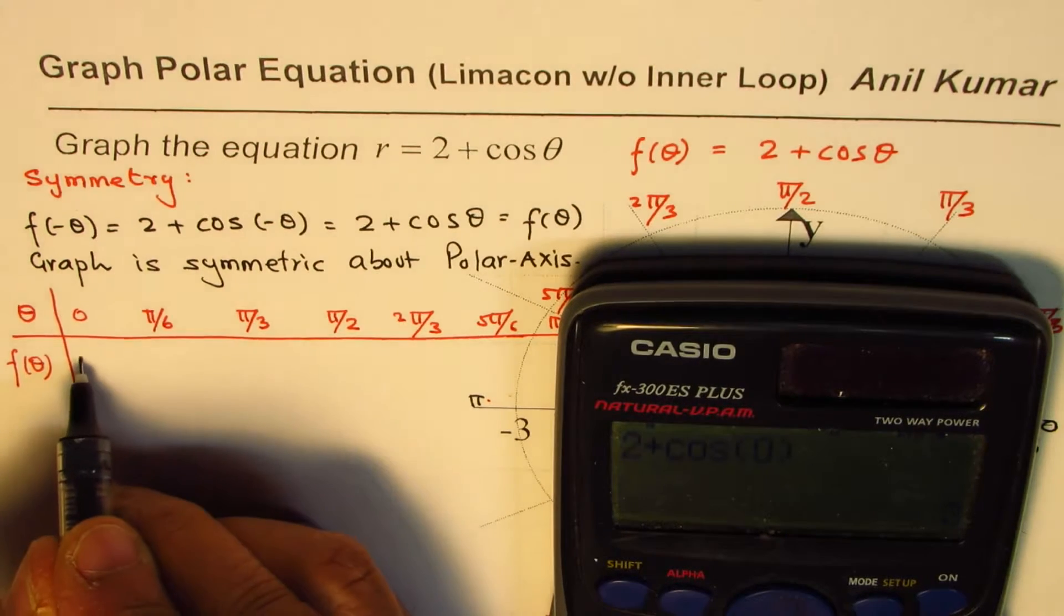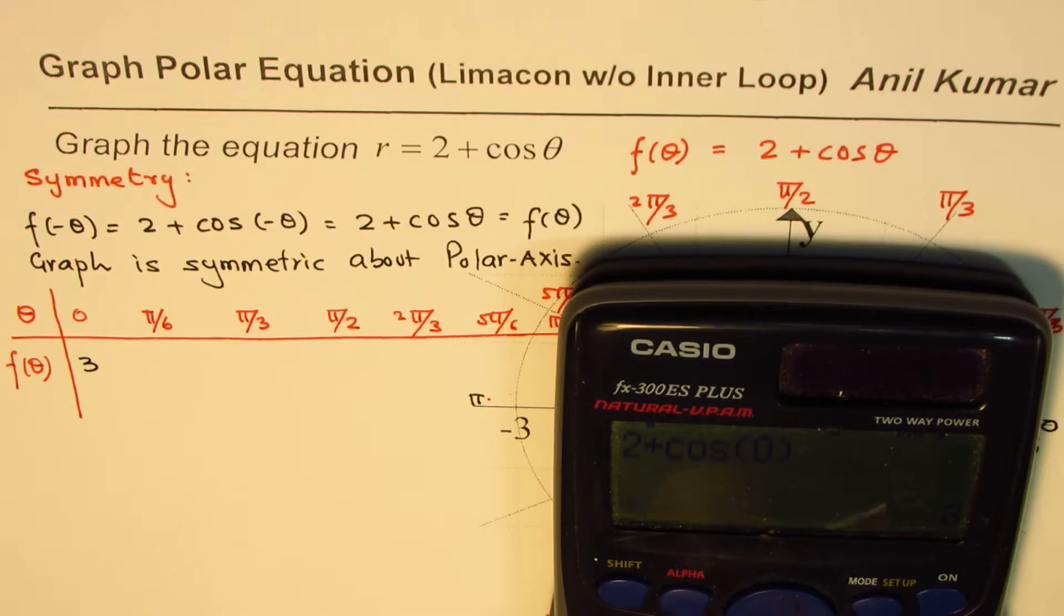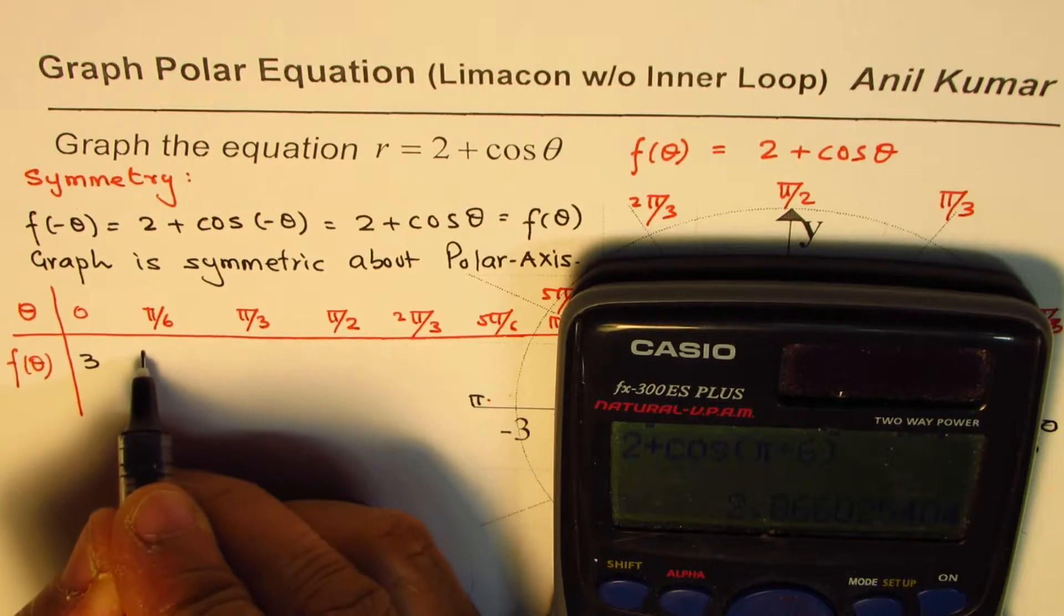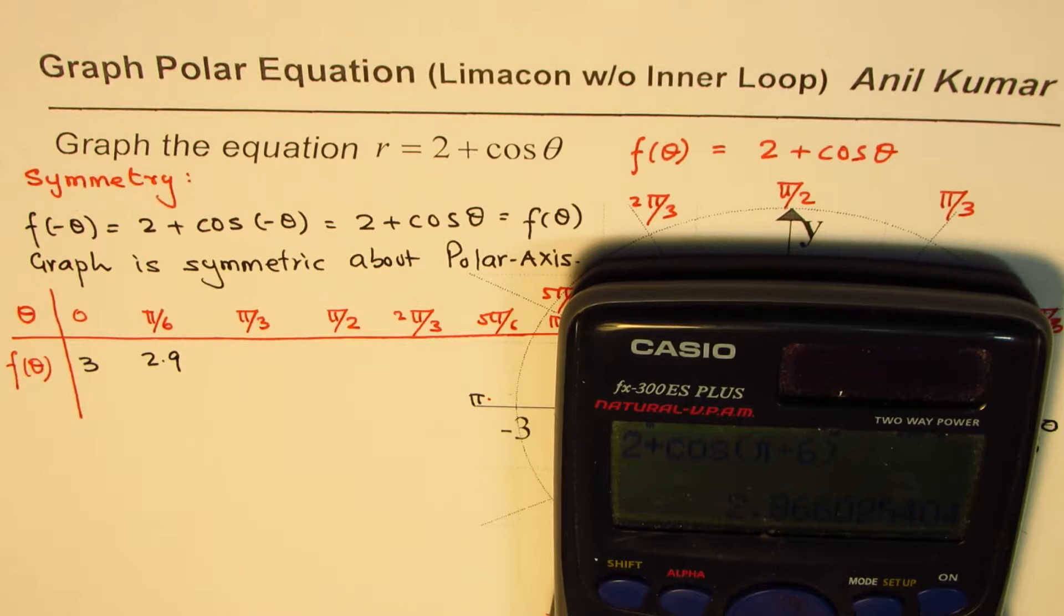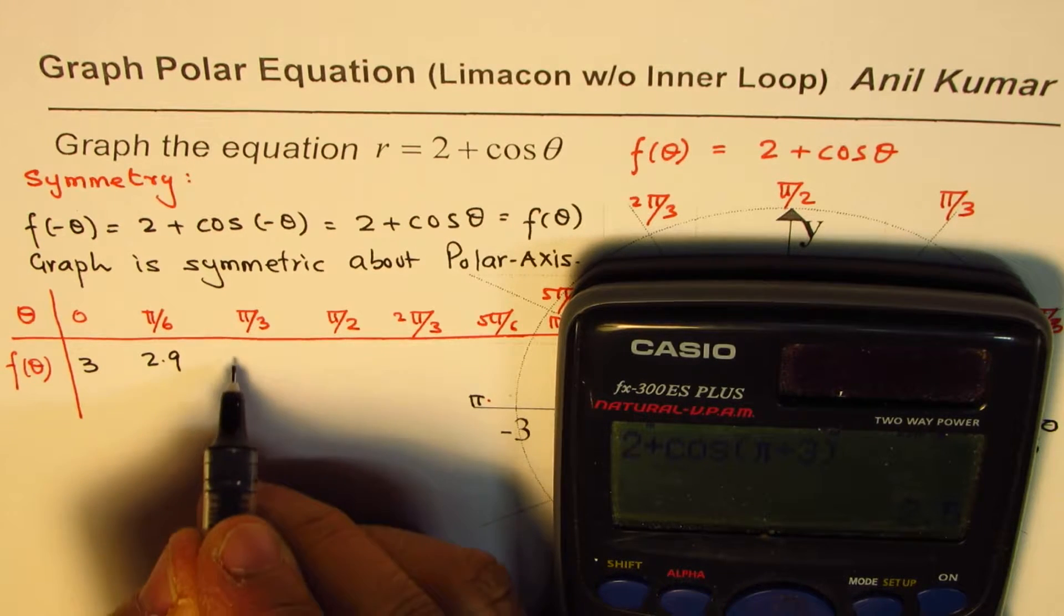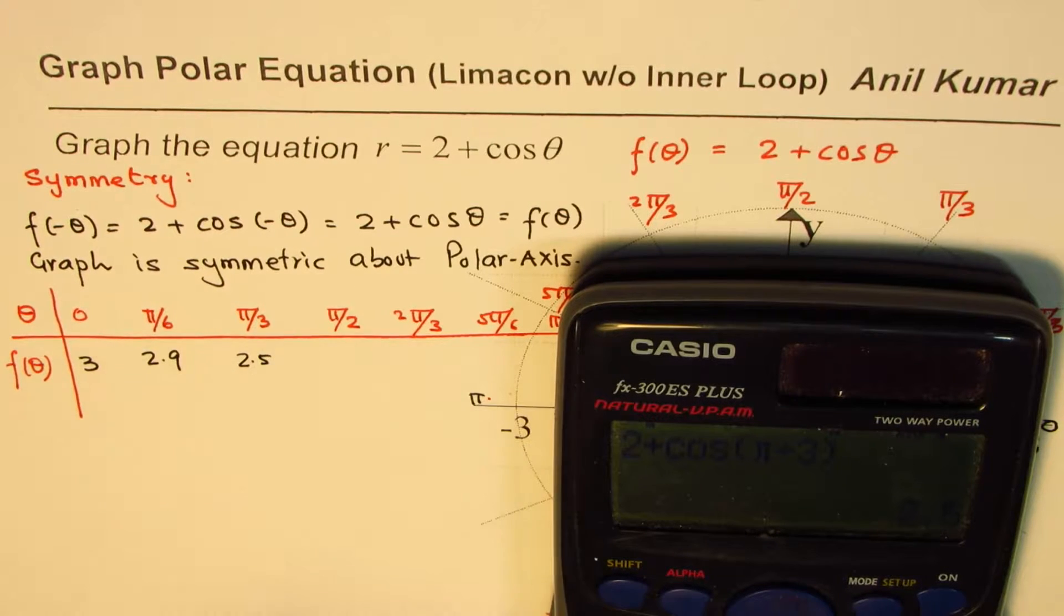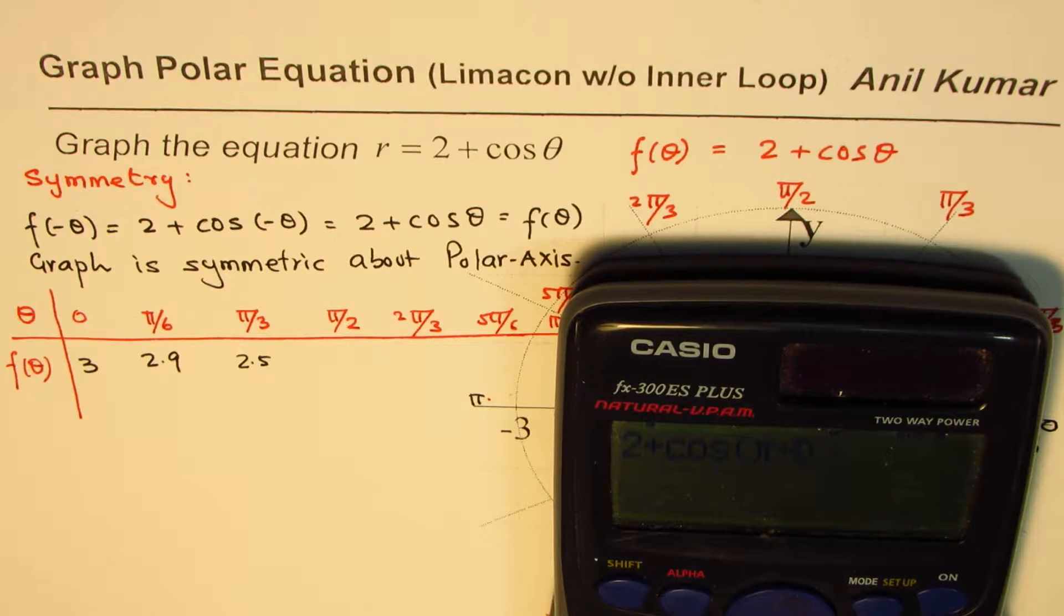Some of them will be decimals. We just take a calculator, 2 plus cos of 0. I know you know the results anyway. So it is 3. Now I'll change this value to π by 6, so this is π divided by 6, and that is equal to in decimals 2.86. Let me write 2.9 here. Then we'll change this value to π by 3, equals to in decimals 2.5. Then, now do π by 2, equals to 2.